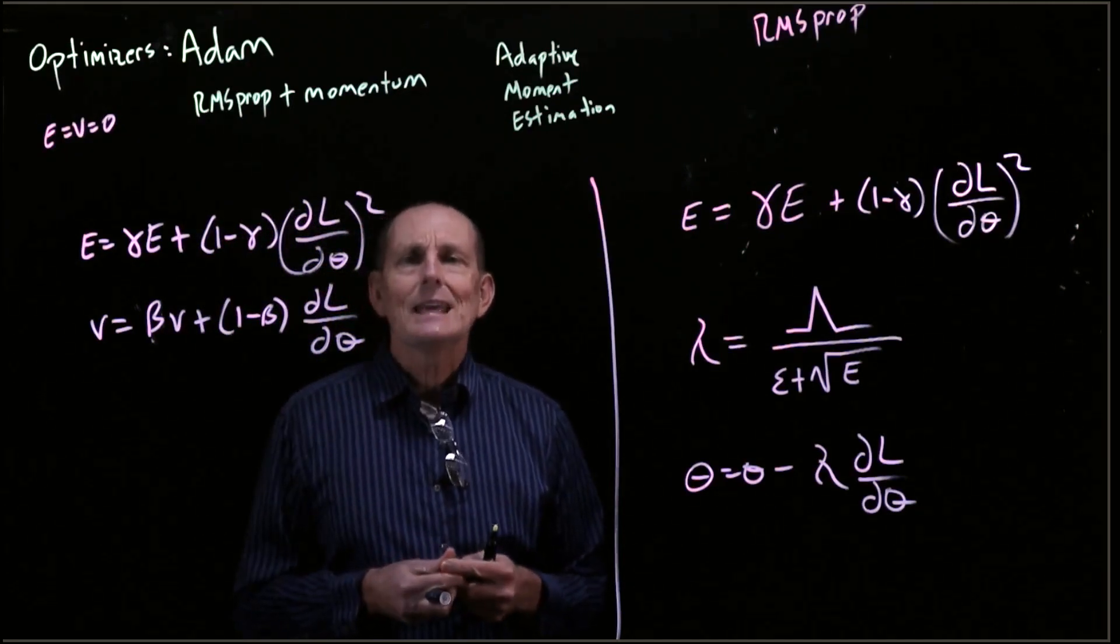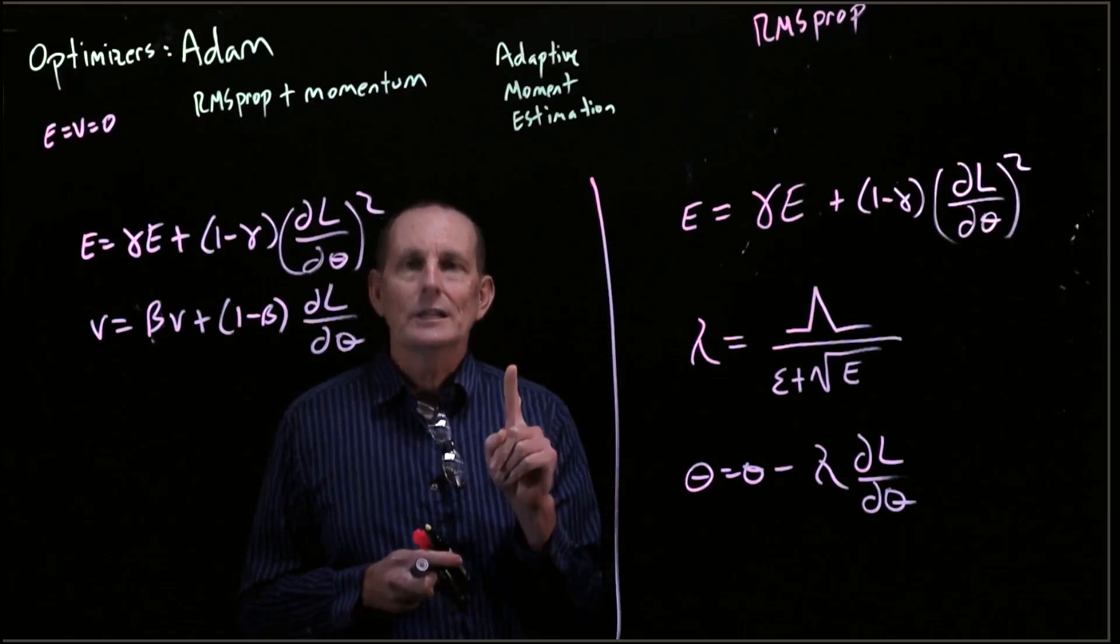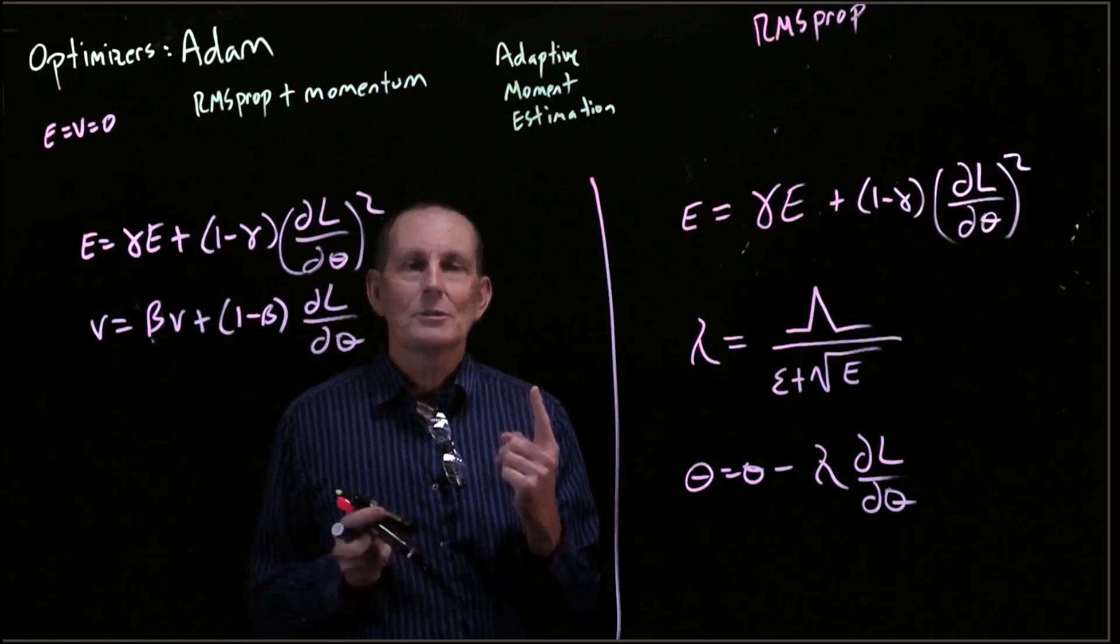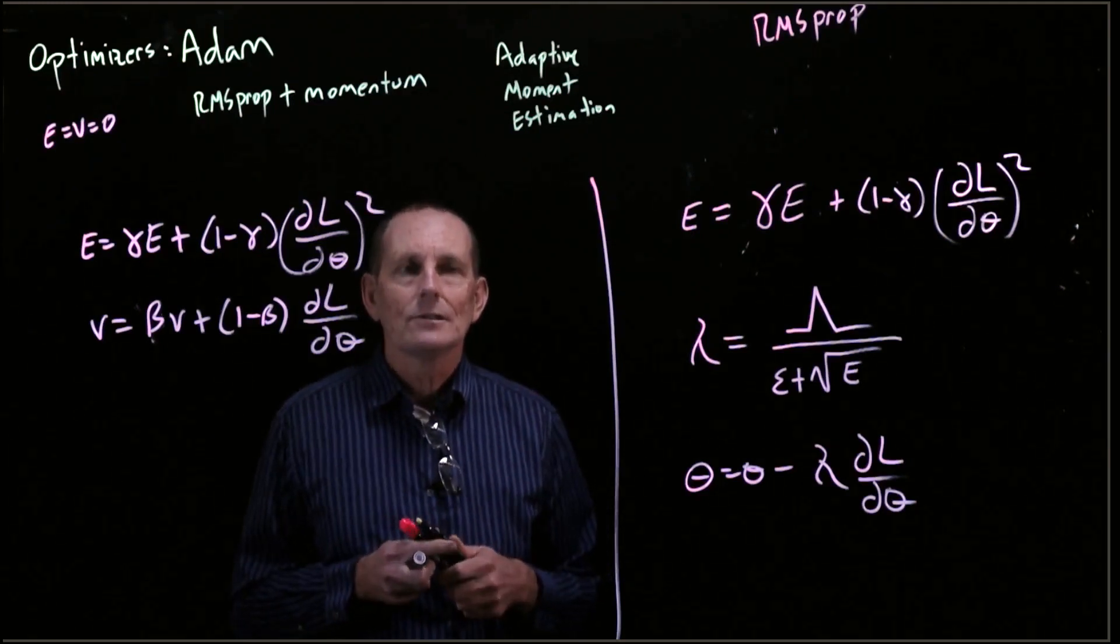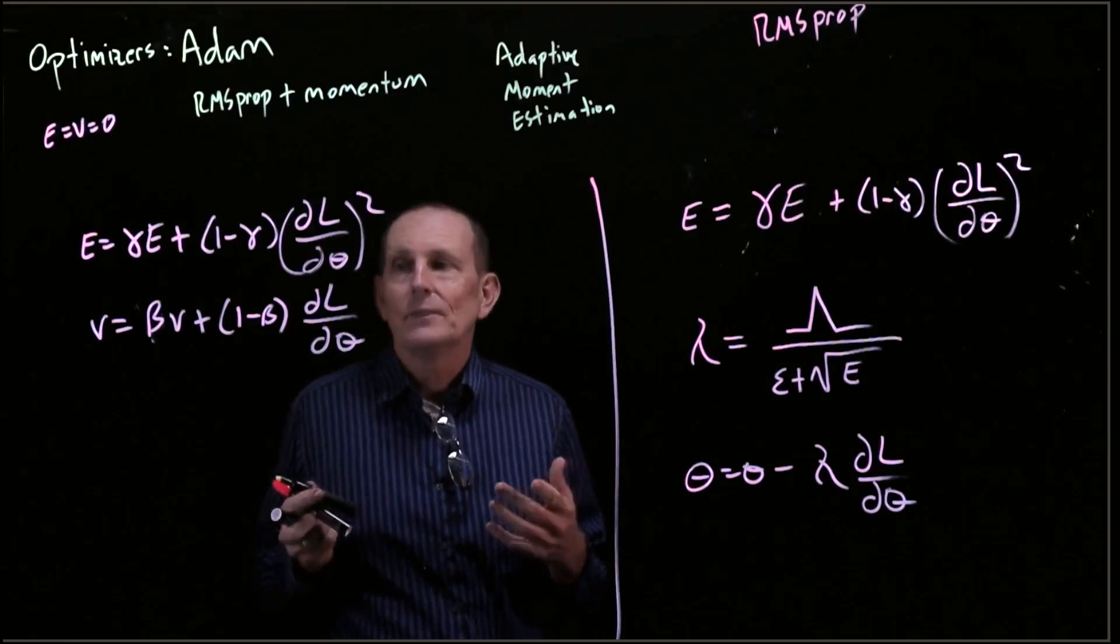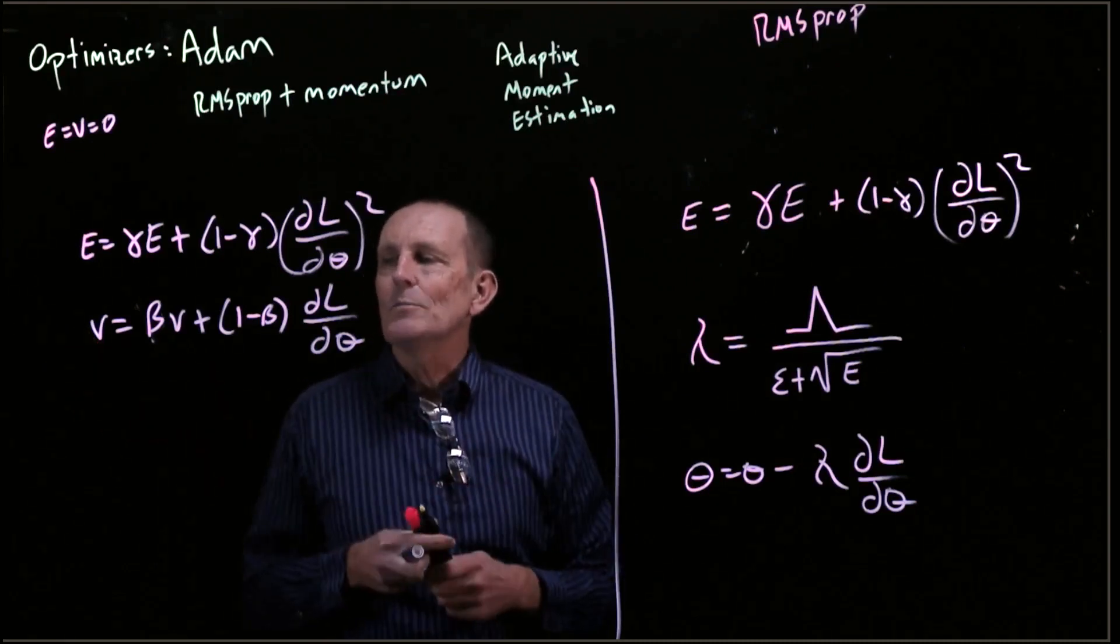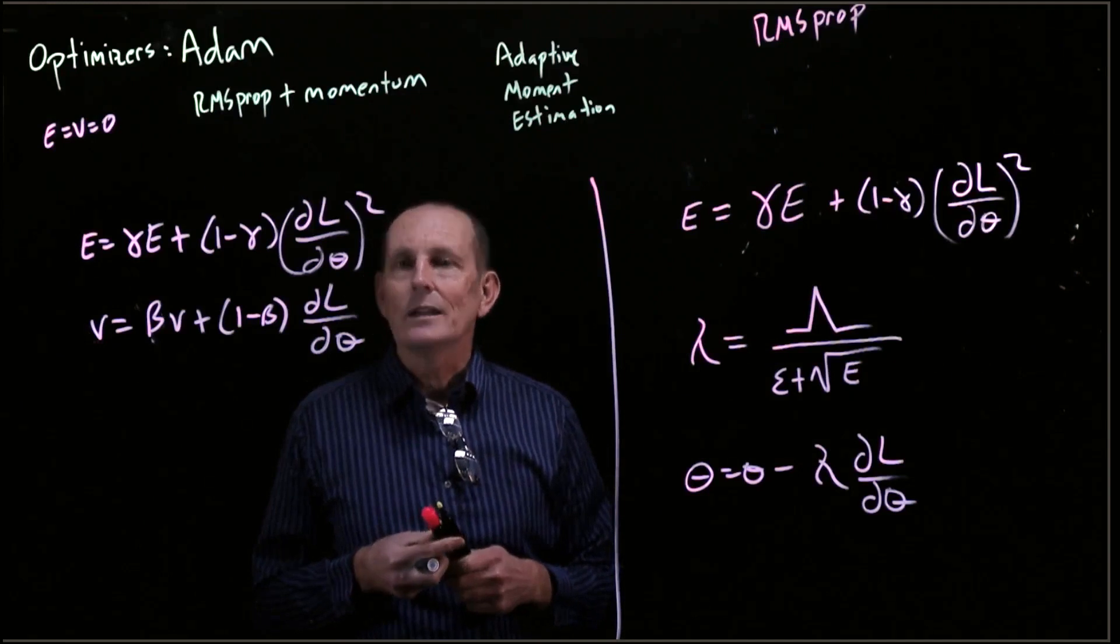Let me give you an example. Let's say you have seen one gradient. What's your best estimate of the mean of that gradient? Well, that gradient. But that's not what we have here. What we have here, let's say beta is 0.9.